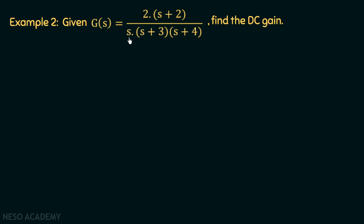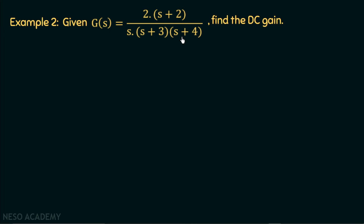This is a type 1 system because one pole is present at the origin, and we are asked to find out the DC gain. If we apply the same expression limit s tending to 0 of G(s), when we substitute the limit, this term will become 0 and the DC gain will become infinite. But the DC gain of a system is never infinite. We can apply method number 1 — comparison with the time constant form — to convert this transfer function to standard time constant form. This will be the homework for you to find out the DC gain of this system using method number 1.